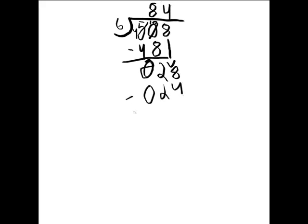So subtract. 8 minus 4 equals 4. 2 minus 2 equals 0. And 0 minus 0 equals 0. So can 6 go into 4? No, it can't. And there's no other numbers to bring down here, so 4 is our remainder. Remainder equals 4.